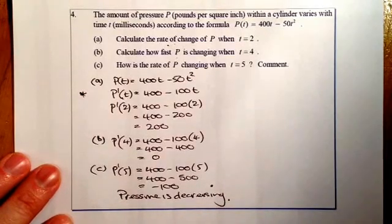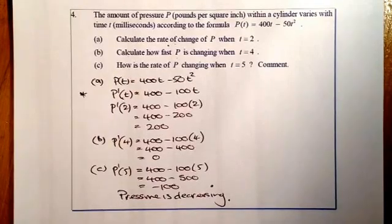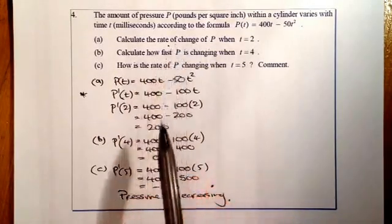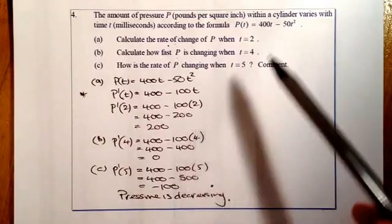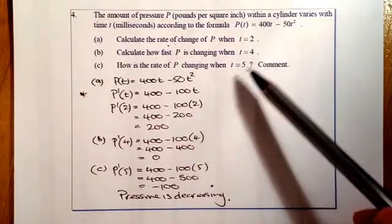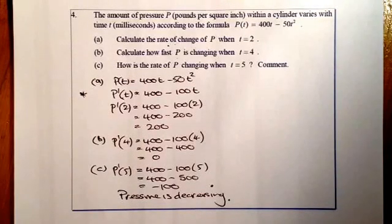And that will be questions 3 and 4 completed. Main things to remember: when you see rate of change, you need to start thinking about differentiation, differentiate, and generally you'll substitute a value in to work out what the rate of change is. Next video will be question 5 on the equation of a tangent to a curve. Good luck with the rate of change questions.